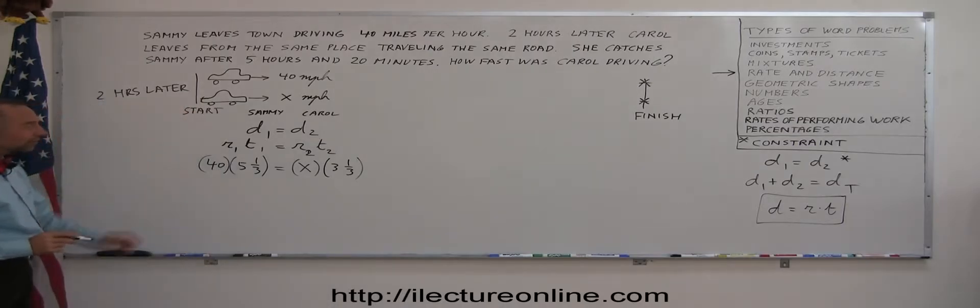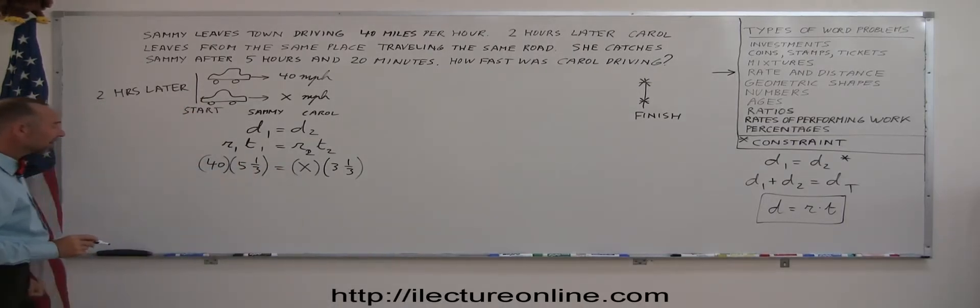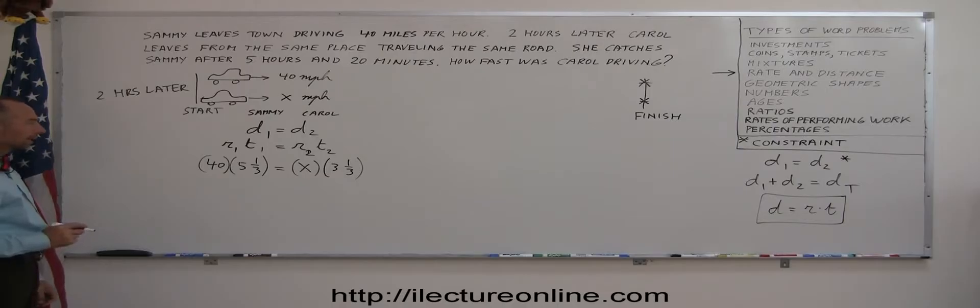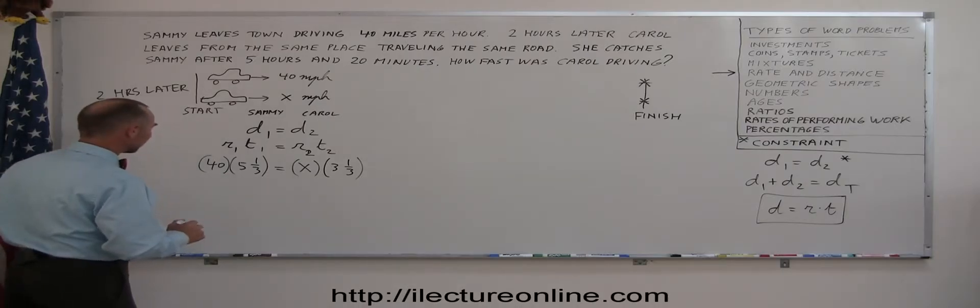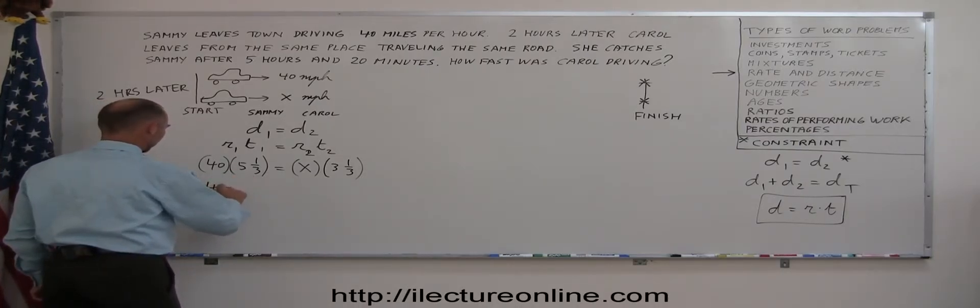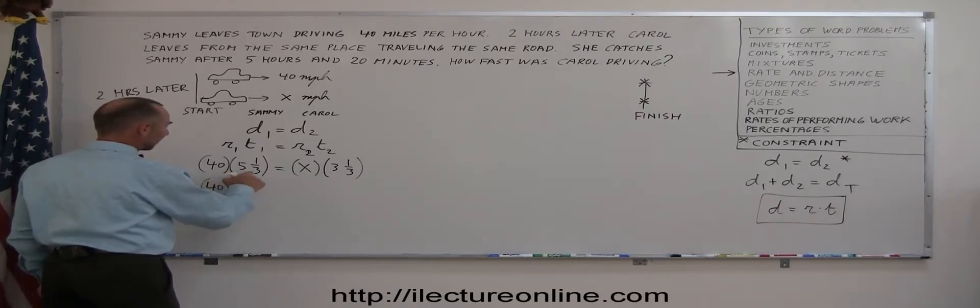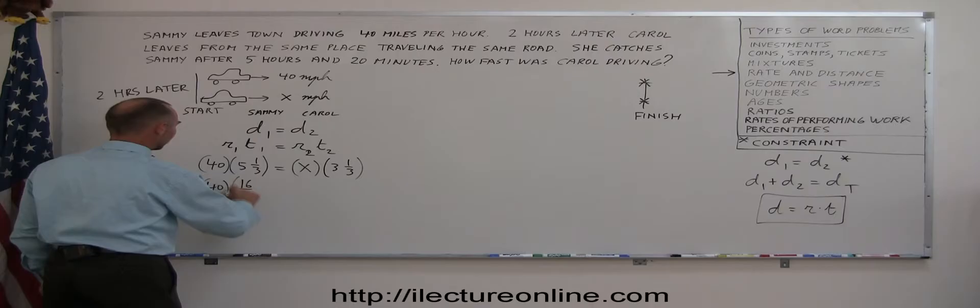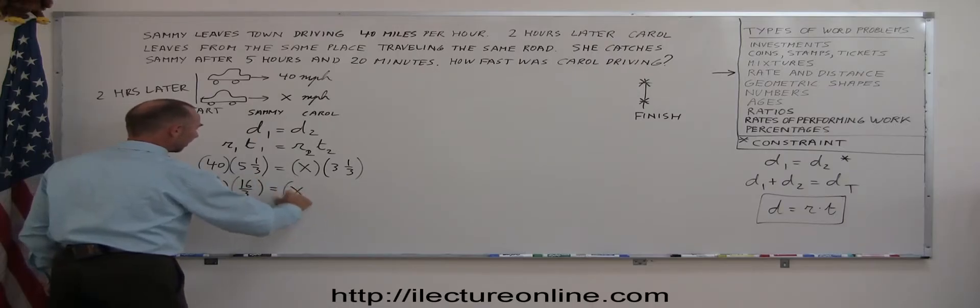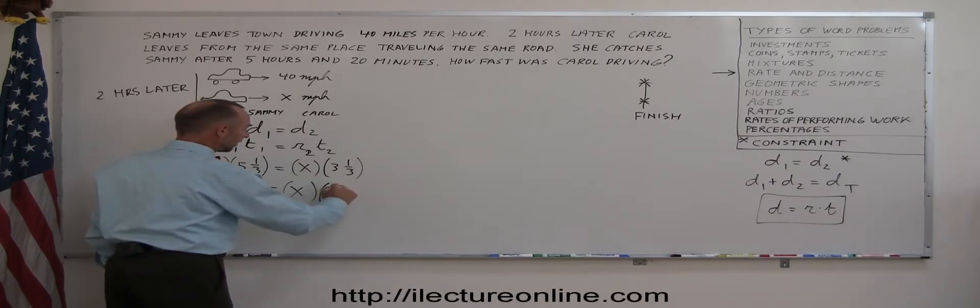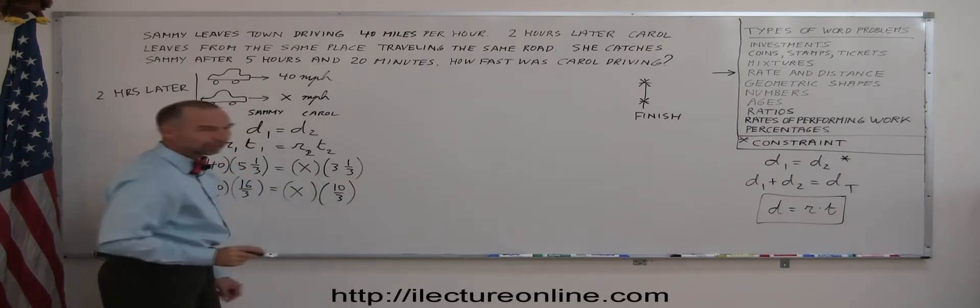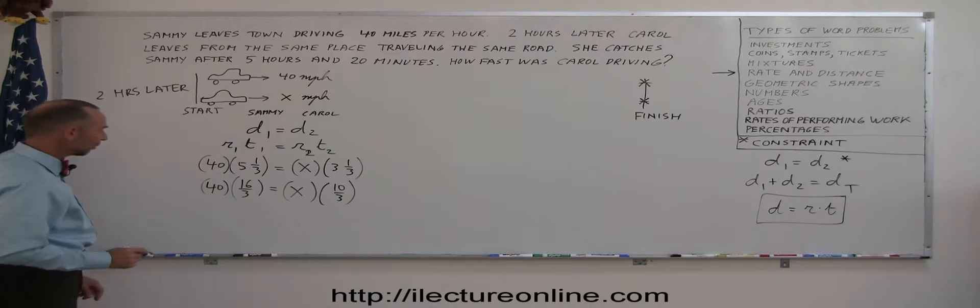And if I solve that equation for x, that will let me know how fast Carol was traveling. The first thing I want to do is convert these into what we call improper fractions. So I'm going to write 5 and 1 third as, well, if I multiply 5 times 3, I get 15 plus 1 is 16. I can write this as 16 over thirds equals x times. And 3 and 1 third, 3 times 3 is 9 plus 1 is 10 times 10 over 3. So I convert it from a mixed number to an improper fraction.